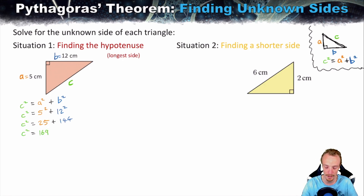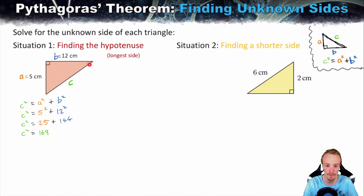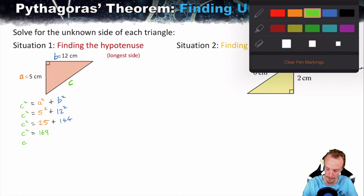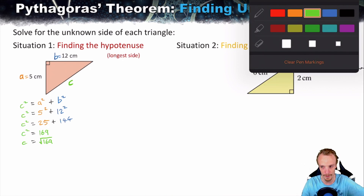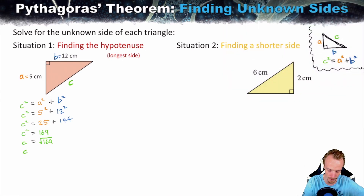At this point you have the area of the square drawn on the longest side, which is 169. But what we're after is the side length itself. Since C squared equals 169, we need the number that multiplied by itself equals 169. So C equals the square root of 169, which is 13, because 13 times itself is 169. You can also use a calculator to confirm this.